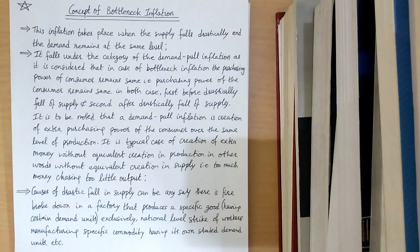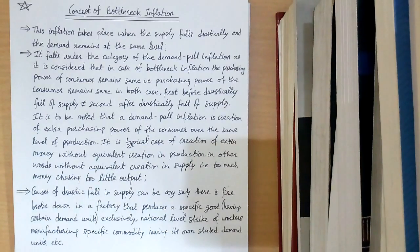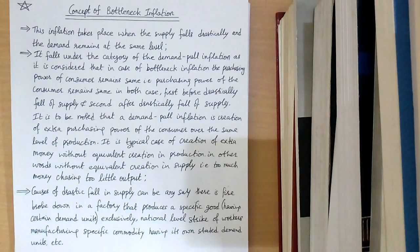It is to be noted that demand-pull inflation is the creation of extra purchasing power of the consumer over the same level of production. It is a typical case of creation of extra money without equivalent creation in supply — that is, too much money chasing too little output.